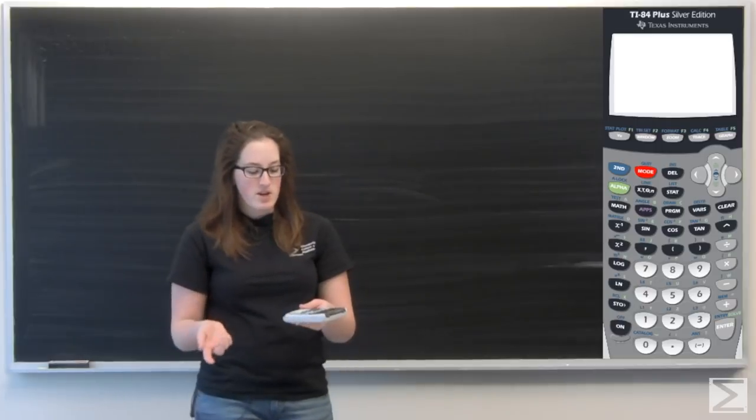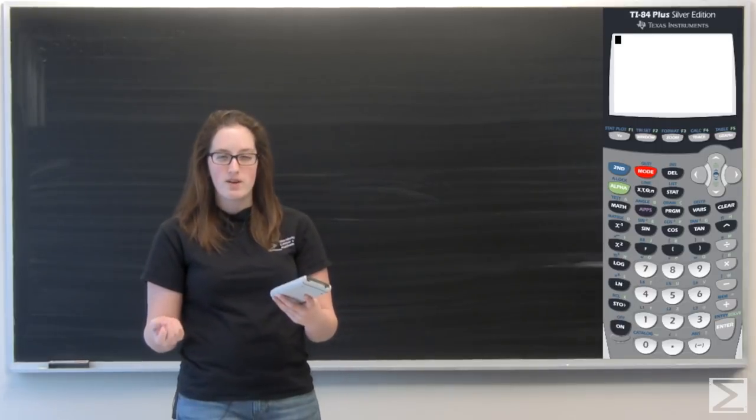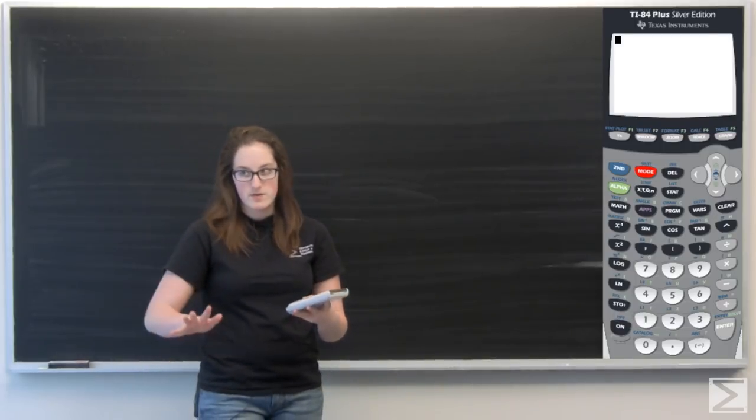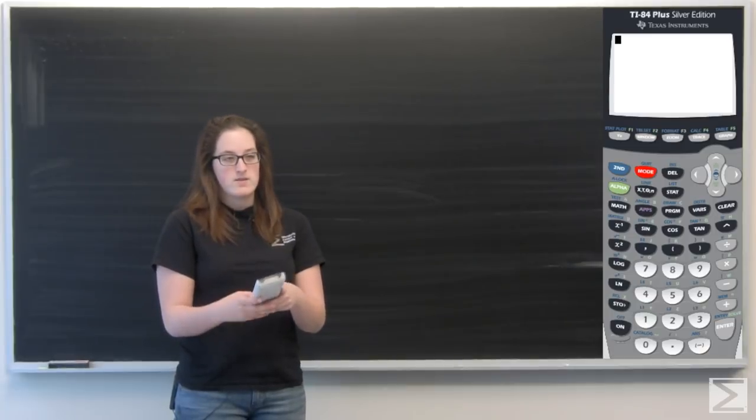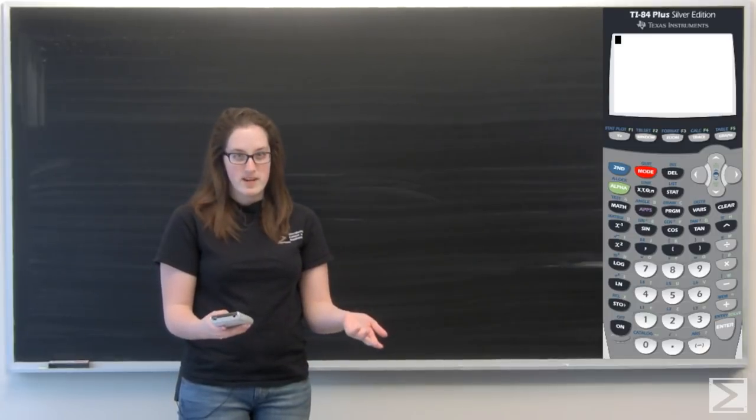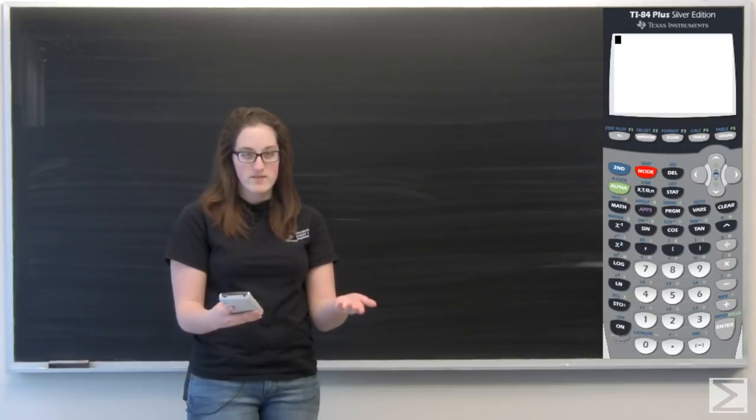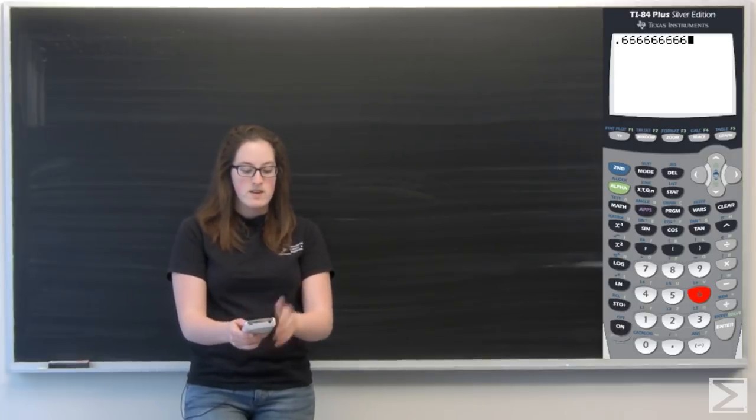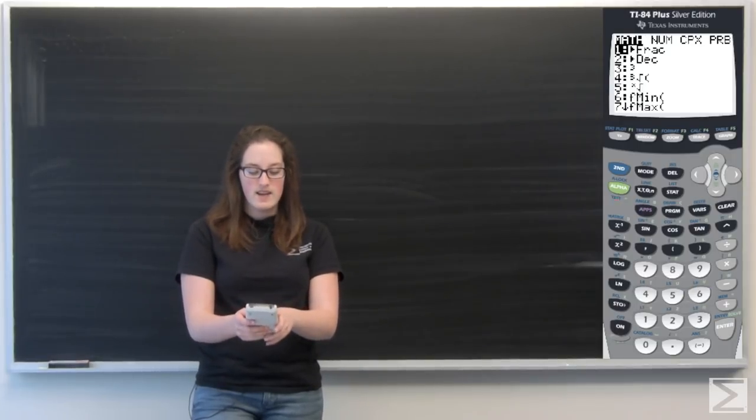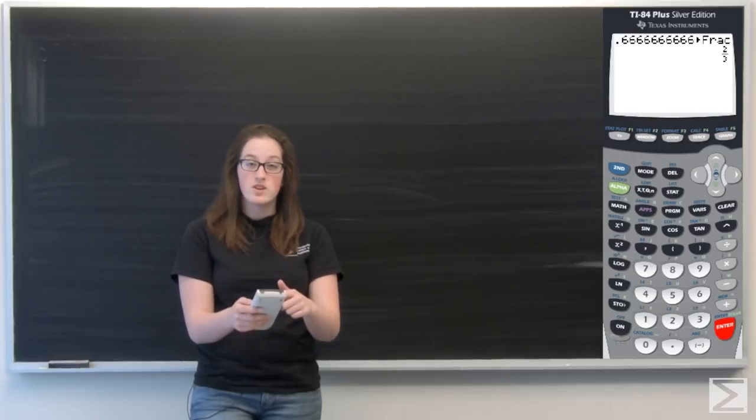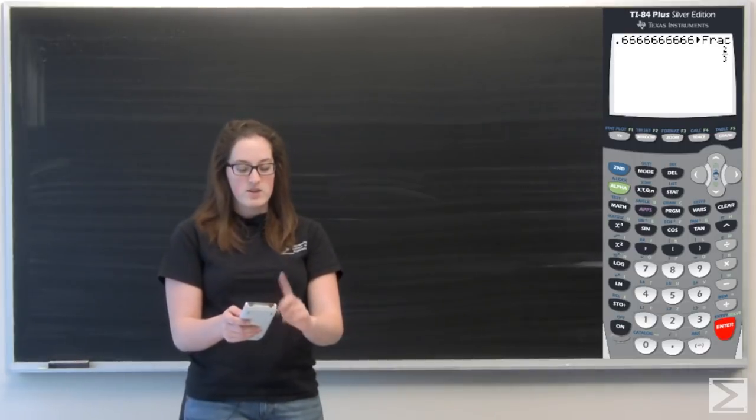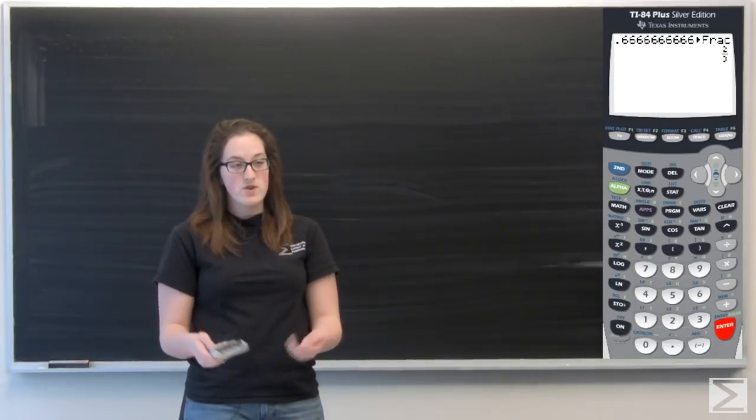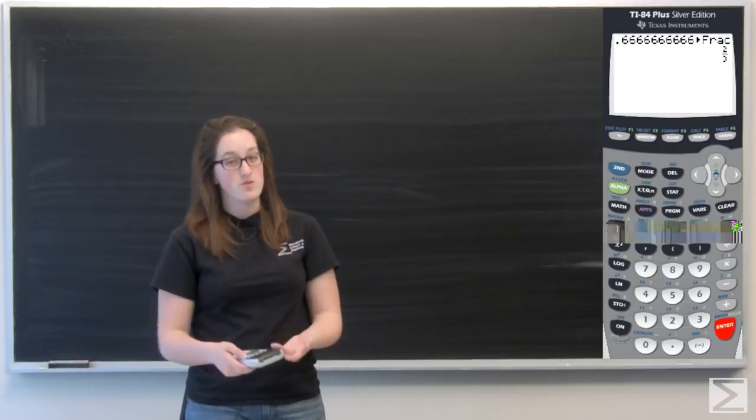So the first thing I'm going to talk about is something that a lot of people actually don't know how to use on your calculator. Say I have this nasty repeating decimal that I get as my answer for something, like 0.6 repeating. So say my calculator gives me that out. I'm like, oh, I can't remember the fraction that is. So if you go to math, actually the first selection is frac. You select that and hit enter. It'll change your decimal into a fraction. So I gave it 0.666666 and it gave me two thirds. So that can be really helpful if you want a rational fraction as an answer, but you're only given a decimal.